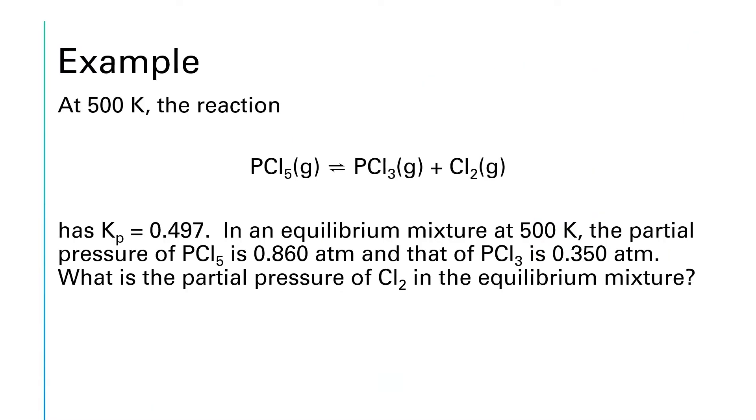In this example, we're given the equilibrium between PCl5, PCl3, and Cl2. We're given an equilibrium constant of 0.497, and we're told at equilibrium we have the partial pressure of PCl5 and PCl3, and we're asked to find the partial pressure of chlorine. Well, if you look at our equilibrium constant expression for this reaction, we're going to have PCl3 times Cl2 divided by PCl5. Now we can treat this as an equation with a bunch of variables in it. We've got K, PCl3, Cl2, and PCl5. Well, we have numbers for all of those except chlorine, so we can rearrange this equation to solve for chlorine.